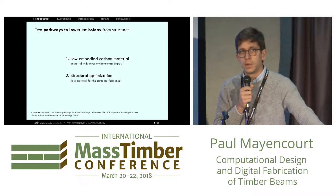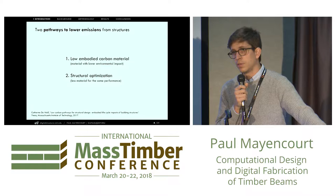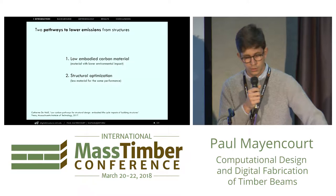There are two known pathways to reduce embodied carbon in buildings. One is using a material that has less embodied carbon, such as timber — and I think that's clear for a lot of people. But another way is to use less of a material. This is the field of structural optimization, where for a given structure, we can achieve the same performance if we know how to place material well.